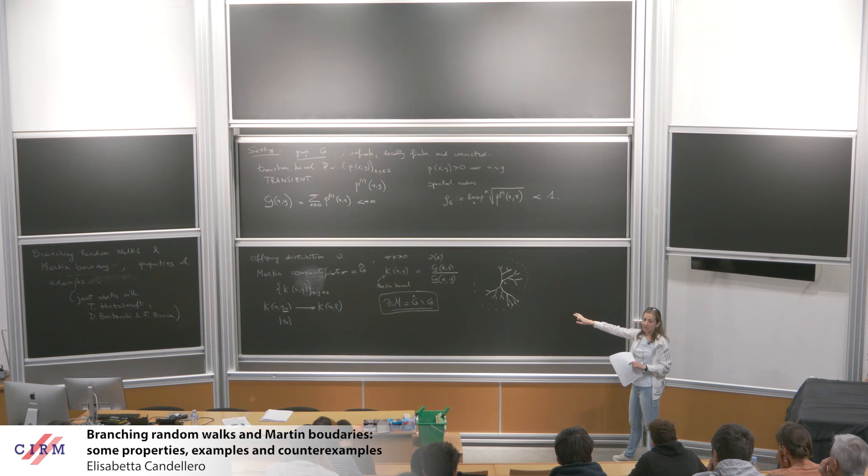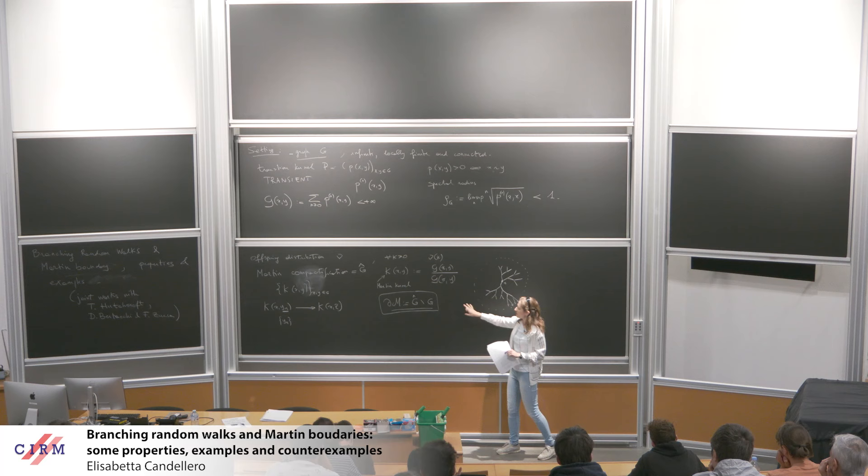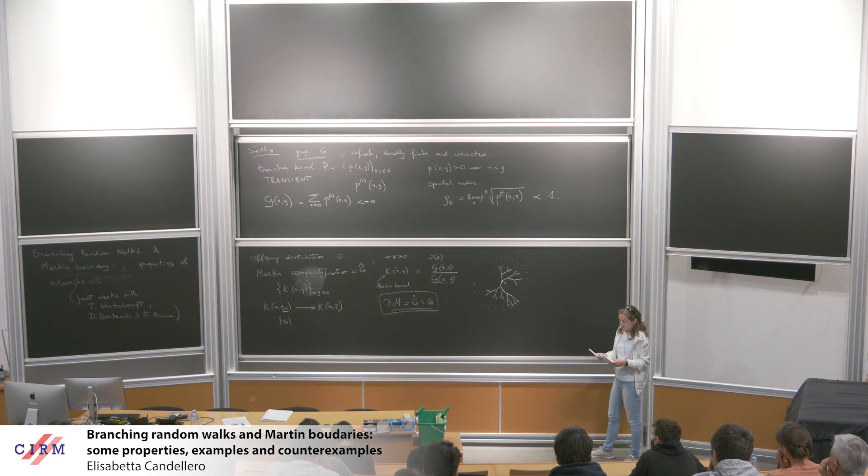In the case of an infinite tree, the Martin boundary coincides with the geometric boundary — really the set of points at infinity. In general, this is not true; it's a much more complicated object. But in some cases, like hyperbolic groups, one can show it is true. This is a way to visualize what it is.